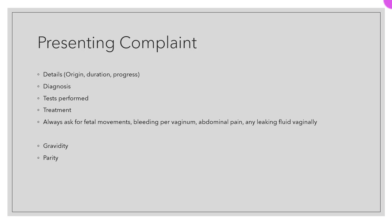The next step is the presenting complaint, which is not very different from other specialties. If she has a specific complaint, we will ask about the origin, duration, and progress of the presenting complaint, whether she is already diagnosed, whether tests have been performed, and treatment she is already taking. In obstetric history always ask for fetal movements, bleeding per vaginum, abdominal pain, and any leaking fluids vaginally. Also ask gravidity and parity within the presenting complaint section.